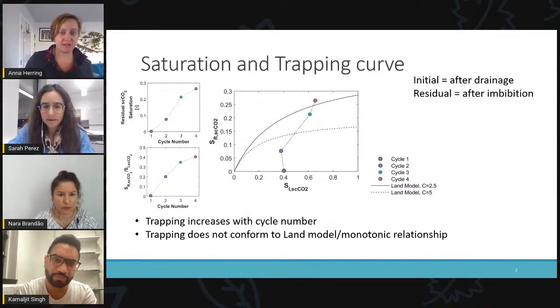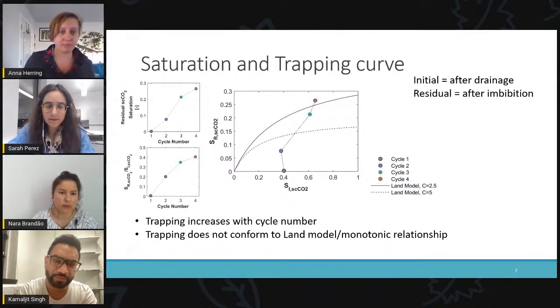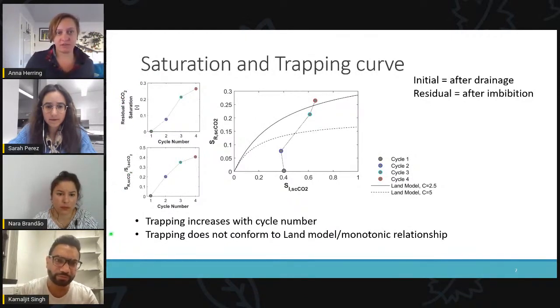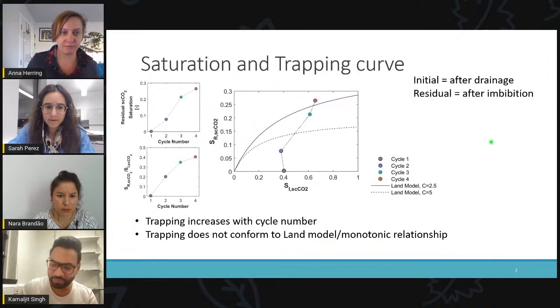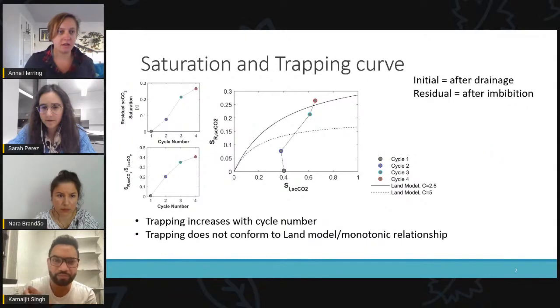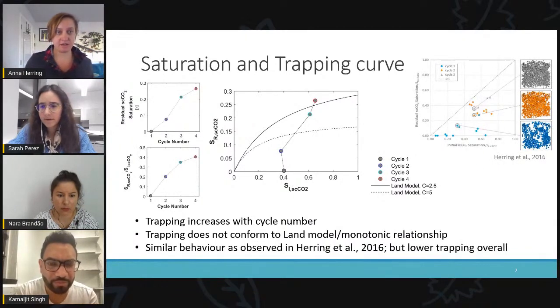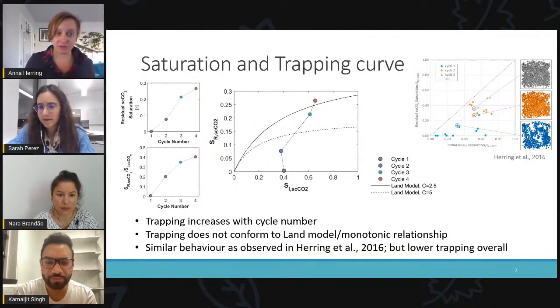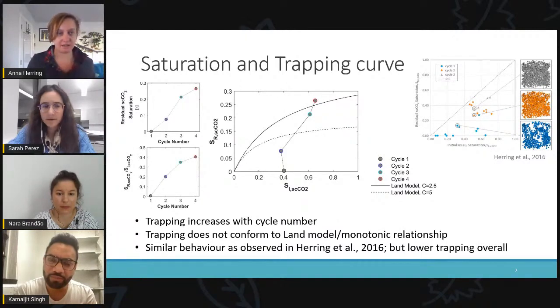In terms of CO2 saturations, and these are measured on the whole core, as I mentioned before, the residual capillary trapped CO2 saturation increases significantly as cycle number increases, as does the trapping efficiency. So this means that when we plot our results on a classic trapping curve, so that's residual saturation as a function of initial saturation, the data does not follow the classic monotonic Land model shape of curve. This is similar to what we observed in our 2016 study. We also saw increased trapping with every cycle, although there is a difference between the two sets of experiments in that, in this newer set of experiments, we ultimately reach a lower value of residual saturation.